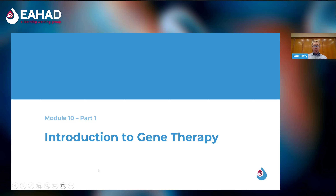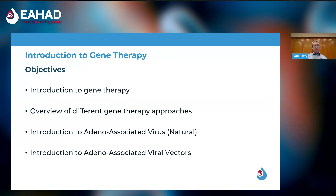In the first part of this module we'll look at an introduction to gene therapy. We'll cover the different modalities by which gene therapy can be applied, then look at adeno-associated virus — the natural virus from which AAV vectors are based — and finally examine AAV vectors used for the treatment of haemophilia in more detail.